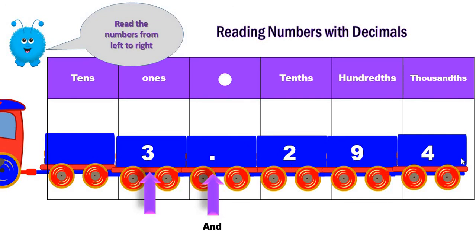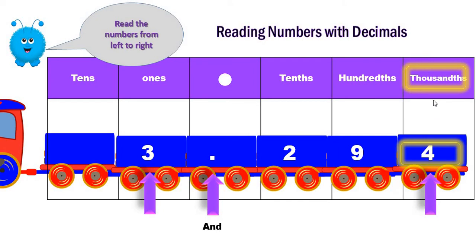Here this is three digits: two hundred ninety-four. And we put the last place, which is thousandths. So again, it's three and two hundred ninety-four thousandths.